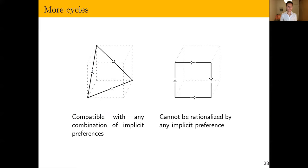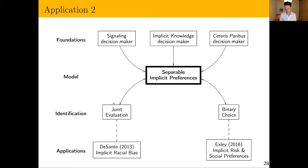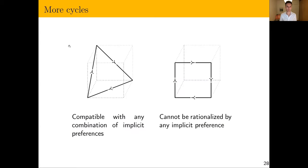The theorem covers any cycle — we can determine if it's consistent with the theory and, if so, what it allows us to infer about implicit preferences. Some cycles tell us something is going on but we can't identify which implicit preference is generating it. Other cycles are actually incompatible with the theory — there is no implicit preference that can generate them.